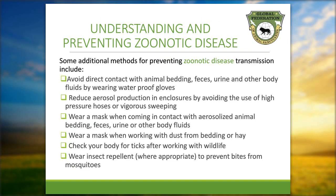Some additional methods for preventing zoonotic disease transmission include: protect sores and cuts with a waterproof bandage or wear waterproof gloves; avoid direct contact with animal bedding, feces, urine, and other body fluids by wearing waterproof gloves; reduce aerosol production in enclosures by avoiding the use of high-pressure hoses or vigorous sweeping; wear a mask when coming into contact with aerosolized animal bedding, feces, urine, or other body fluids; wear a mask when working with the dust from bedding or hay; check your body for ticks after working with wildlife; and wear insect repellent where appropriate to prevent bites from mosquitoes.